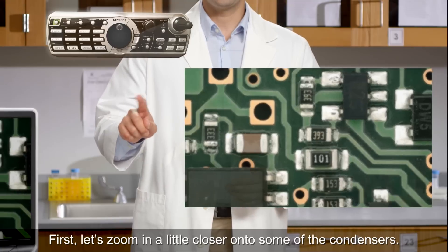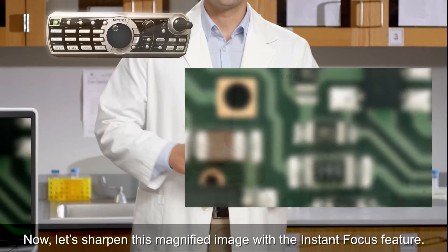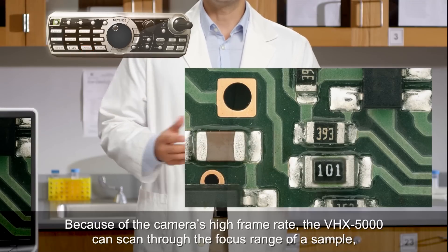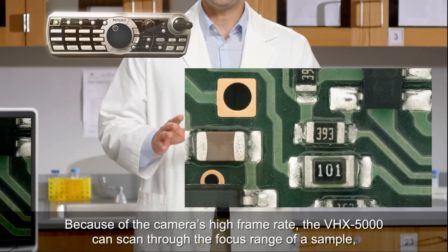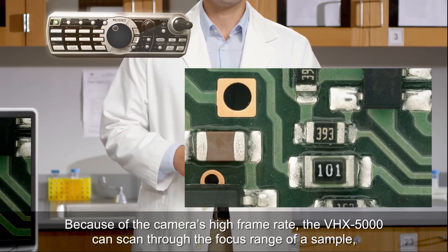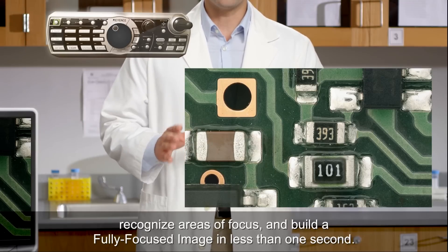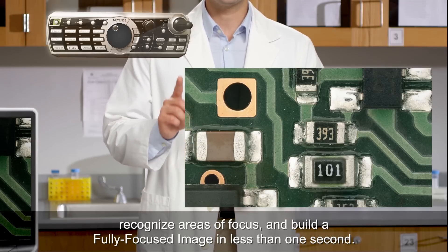First, let's zoom in a little closer onto some of the condensers. Now let's sharpen this magnified image with the instant focus feature. Because of the camera's high frame rate, the VHX5000 can scan through the focus range of a sample, recognize areas of focus, and build a fully focused image in less than one second.